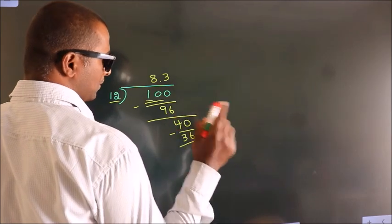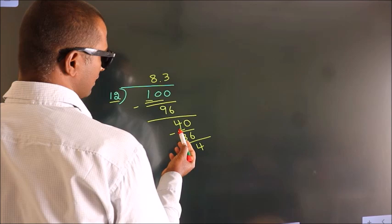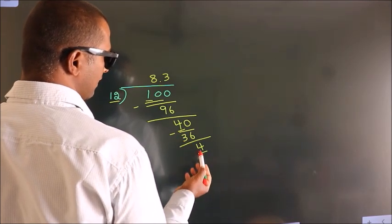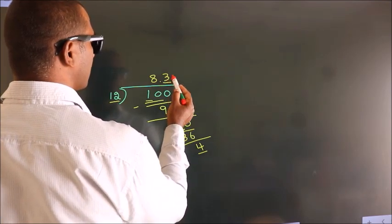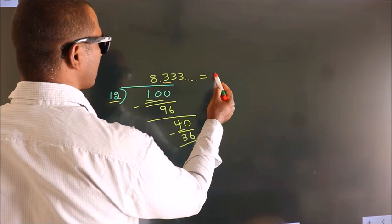Now you observe. Here we had 4, and we got 4 again. That means this number keeps on repeating. So this is our quotient.